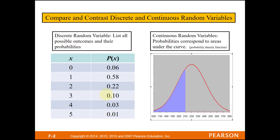With continuous random variables, there are too many — infinitely many — possible outcomes, so we use something called a probability distribution function. Probabilities correspond to areas under the curve between the x-axis and the curve. For example, the purple area shown represents the probability that a continuous random variable takes on a value of 2100 or less. You can't look at probabilities at a single point; you have to use intervals, and the probability is the area above that interval and below the curve.